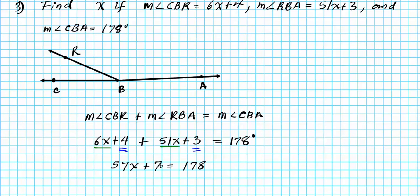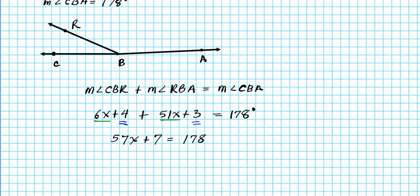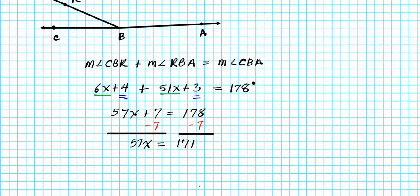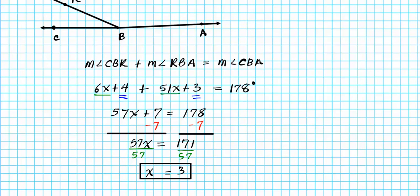To get x isolated, we subtract 7 from both sides, leaving us with 57x equals 171. Then we divide both sides by the coefficient of x, which is 57. Since 57 times 3 equals 171, x equals 3. That is our final answer for question number 3.